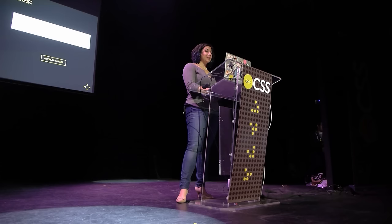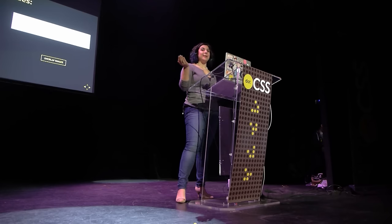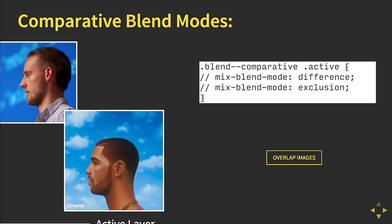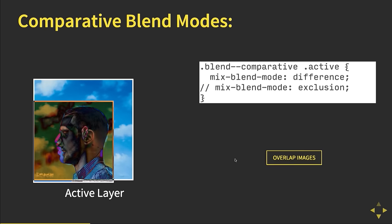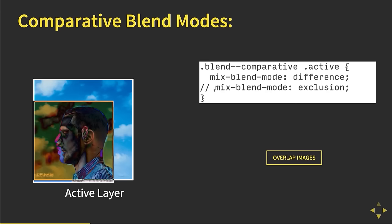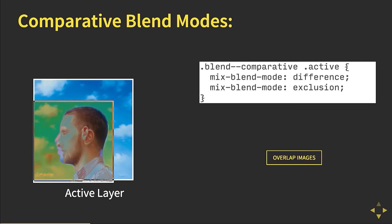When we look at comparative blend modes, using my friend Harry Roberts — CSS Wizardry online — and comparing him to Drake: the difference blend mode subtracts the pixels' luminosity, and it was originally used for lining up transparencies in screen printing — when the page is completely black, you know it's perfectly aligned. The difference between difference and exclusion — no pun intended — is that with exclusion, similar pixels turn gray instead of black.